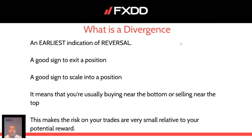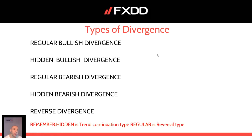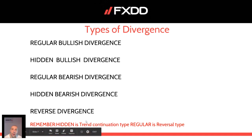What are the different types of divergence? Those are: regular bullish divergence, hidden bullish divergence, regular bearish divergence, hidden bearish divergence, and so-called reverse divergence. Reverse divergence is something different, similar to regular divergence but still tradable. Hidden divergence is a trend continuation type, while regular divergence is a reversal type.